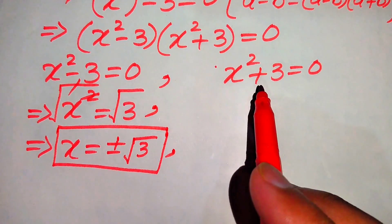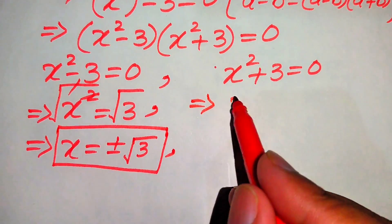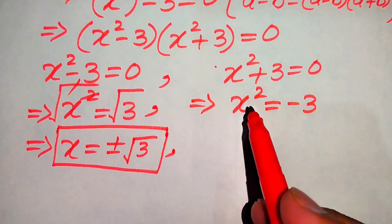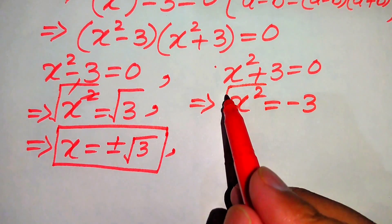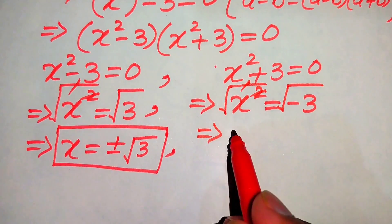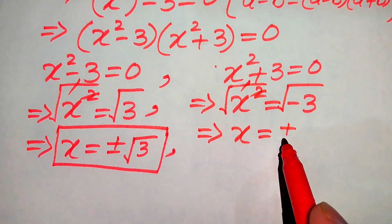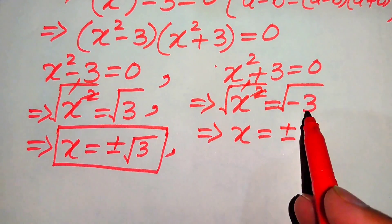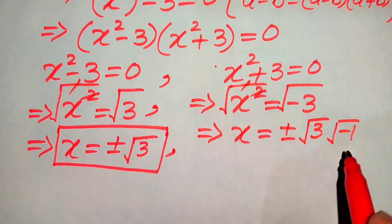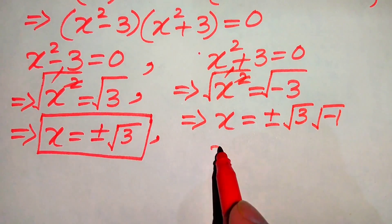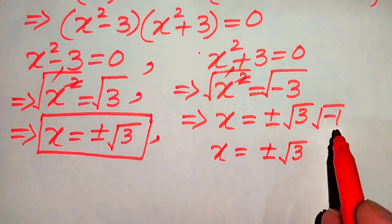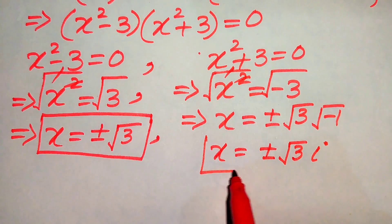For the remaining roots, we focus on the second case. We move plus 3 to the right hand side and get x squared equals to minus 3. We again take the square root on both sides, and we get x equals to plus or minus square root of 3 into square root of minus 1. Since the square root of minus 1 equals iota, we obtain x equals to plus or minus square root of 3 times iota.